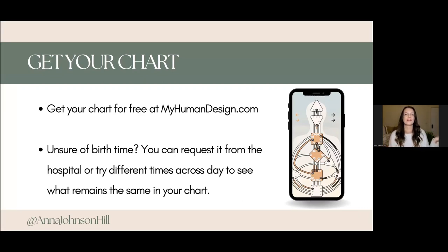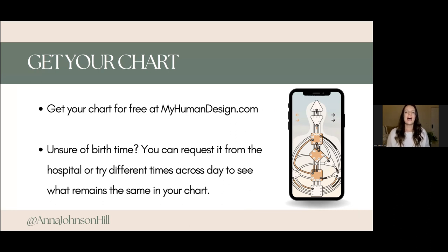So how can you get your own human design chart? If you go to a website called the My Human Design app — you can also get it on your phone — or go to myhumandesign.com on your computer, and you can get your chart for free. You will need your birthday, your birth time, and your birth location.